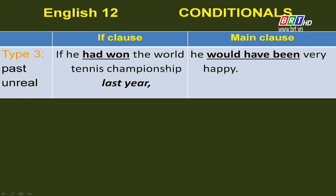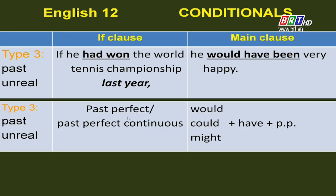Type 3 conditional. We use the Type 3 conditional to talk about an event or situation that was not real in the past. In the if-clause, the verb is in the past perfect tense. In the main clause, the form is 'would have + past participle.' Sometimes the if-clause may use the past perfect continuous. For the main clause, 'would' can be replaced by 'could' or 'might.'